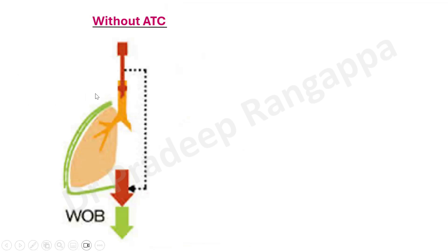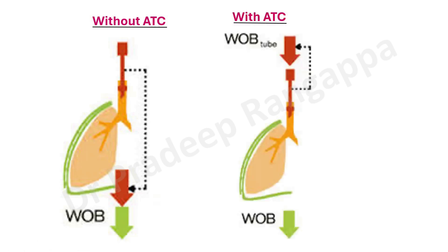Automatic tube compensation significantly reduces work of breathing by compensating for this pressure drop. Without ATC, the resistive load conferred by the pressure drop is transferred to the airway and lungs, increasing work of breathing. With ATC, the work of breathing that would otherwise be transmitted to the airway and lungs is compensated at the tube level, so there is no excess resistive work transmitted to the airway and lungs.